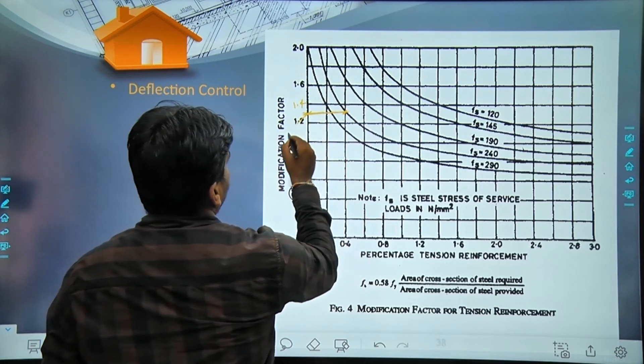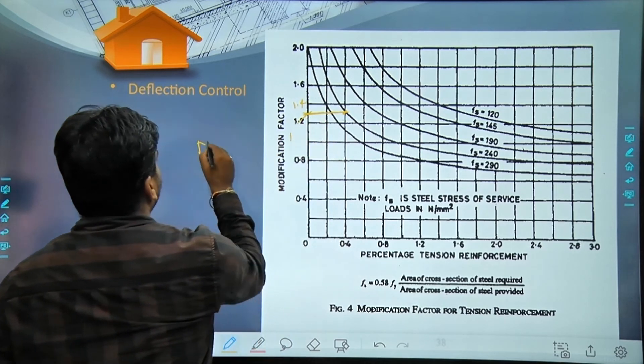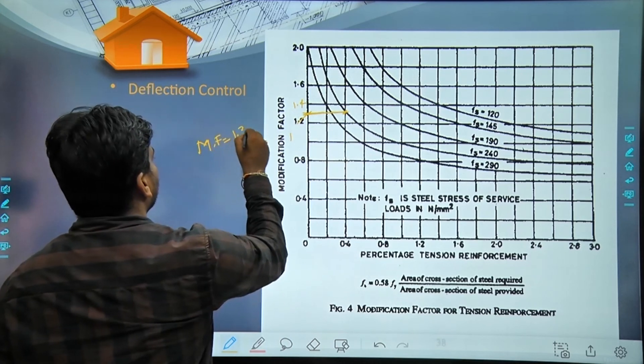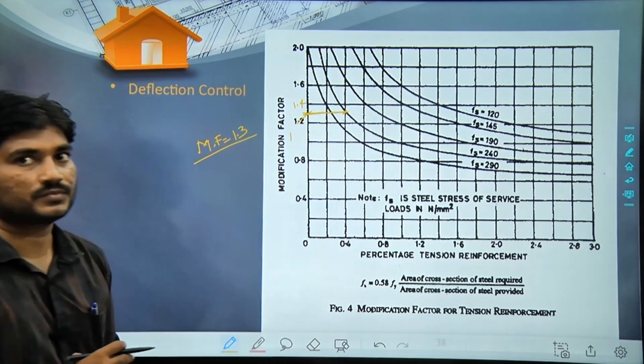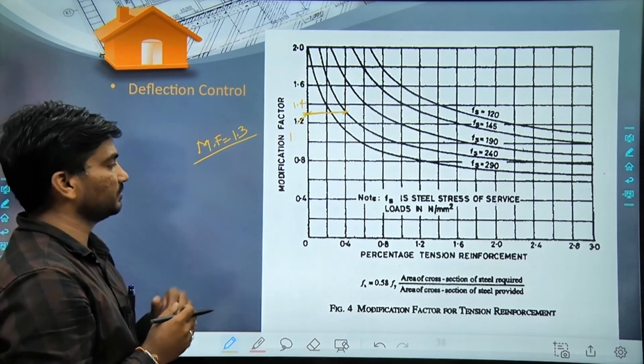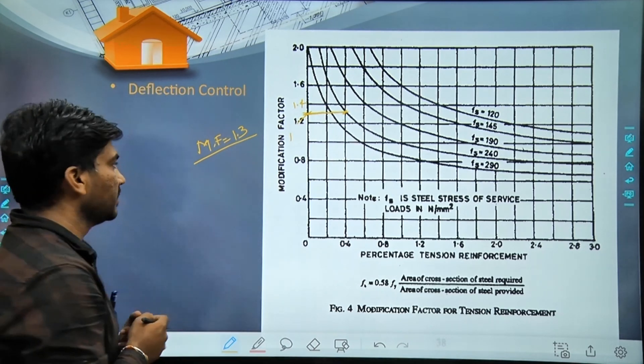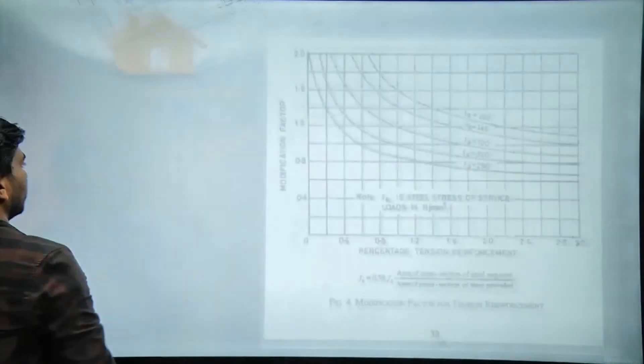So we take this line, which is 1.2, so this will be 1.4 and this is 1.6. It's coming between these, so we can consider that the modification factor is 1.3. So it is very simple. Then we will modify our values with this modification factor.